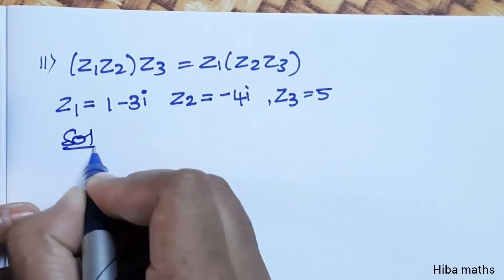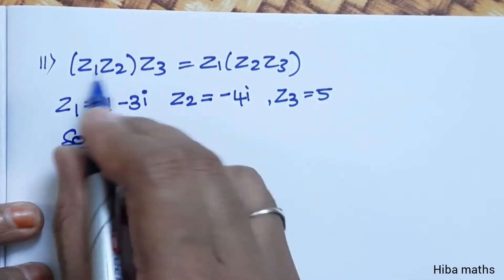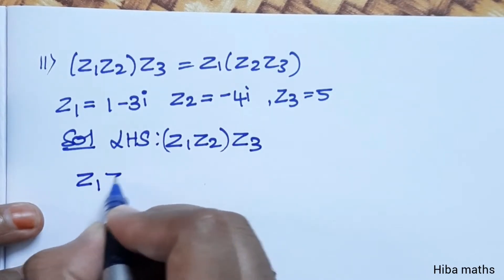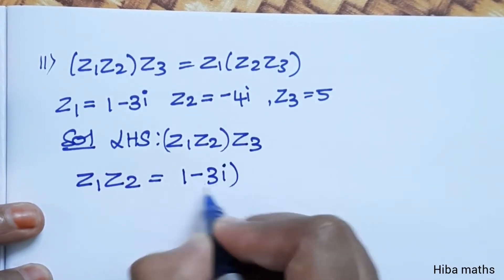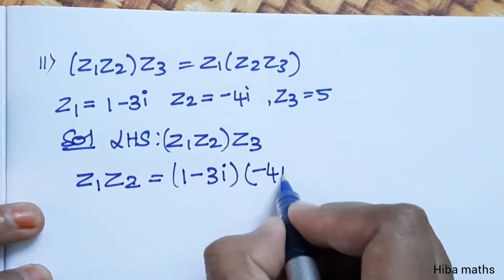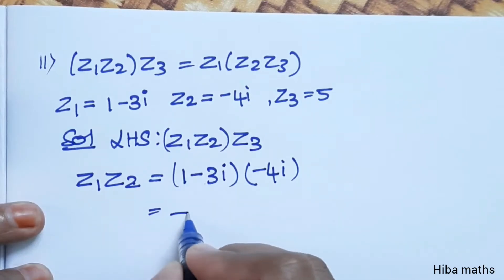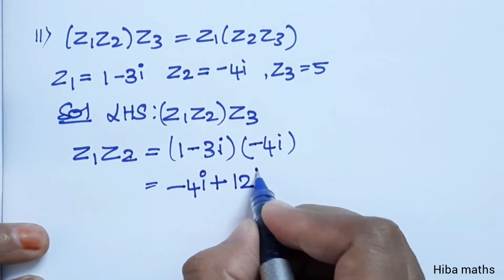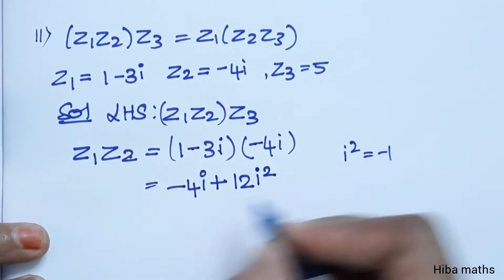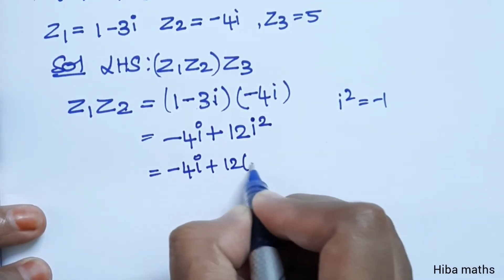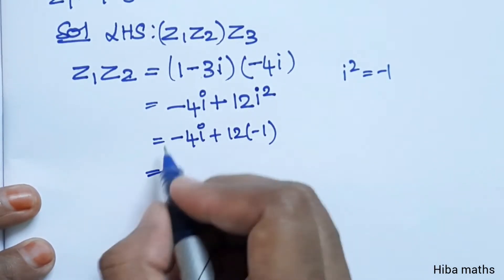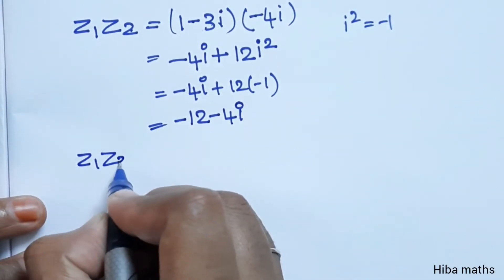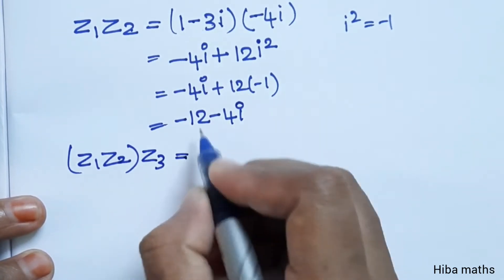First LHS: z1 into z2 into z3. First step, compute z1 into z2. z1 is 1 minus 3i, z2 is minus 4i. Inside multiply: 1 into minus 4i is minus 4i, minus 3i into minus 4i is plus 12 i-squared. Since i-squared equals minus 1, we get minus 4i plus 12 times minus 1, which gives minus 12 minus 4i.